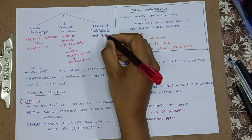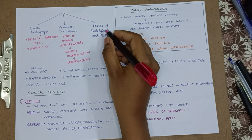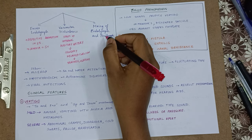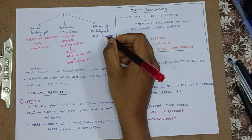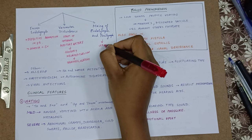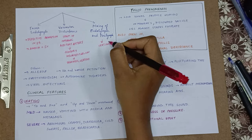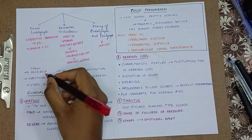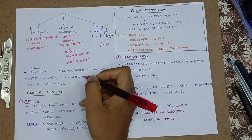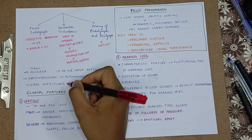The third mechanism is by mixing of endolymph and perilymph. When there is rupture of the Reissner's membrane, there is mixing of perilymph and endolymph, which causes vertigo. Other causes may be allergy, sodium water retention, hypothyroidism, autoimmune disorders, and viral infections.